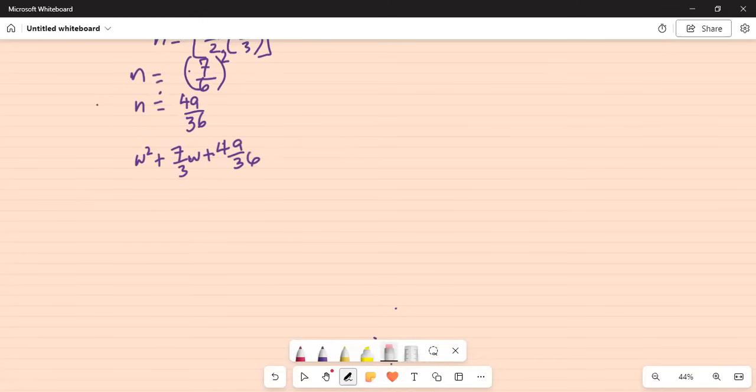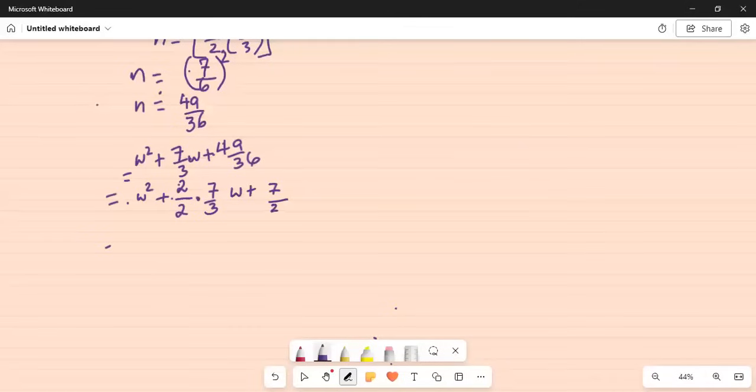Equal to, I will write it as w² plus 7 over 3, nothing in front of 7 over 3, or you can assume 1. So, I multiply by 2 and divide by 2, 7 over 3w plus 49 by 36 is 7 over 2 times 3, 7 over 6 square.